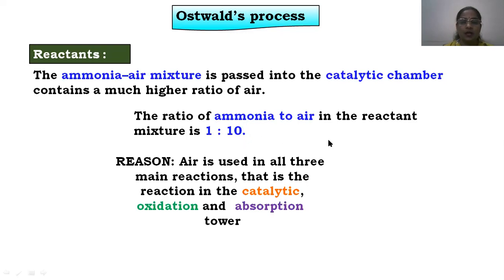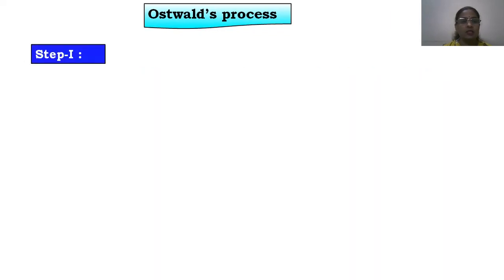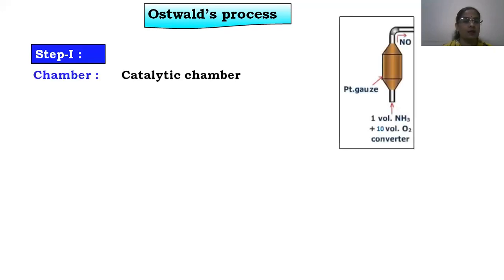Let us study the reactions and chambers involved in Oswald's process. The three main reactions take place in the catalytic chamber, oxidation chamber, and absorption tower, all requiring oxygen — which is why air is taken in large quantity. Step number one takes place in the catalytic chamber. You can see in this diagram there is a platinum gauze kept inside this apparatus.